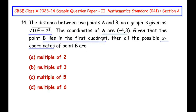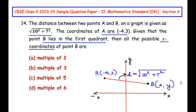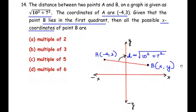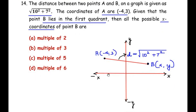To understand the given question, let us draw a rough diagram of the graph first. The given data has been represented on the graph. You can see the X axis and Y axis are marked. The coordinates of point A are at (-4, 3), which lies on the negative X axis side, so it belongs to the second quadrant.